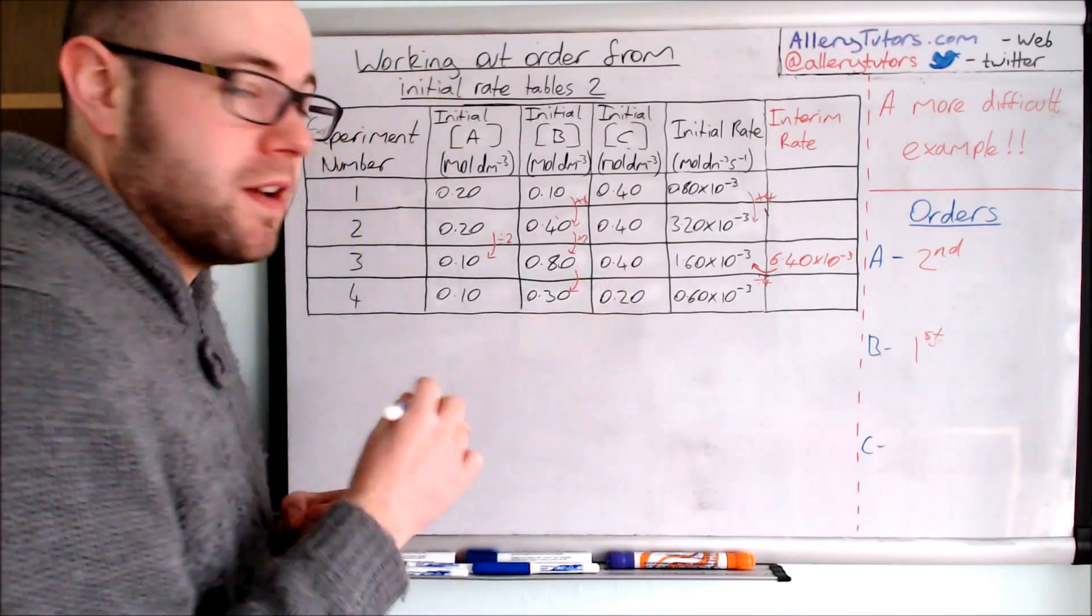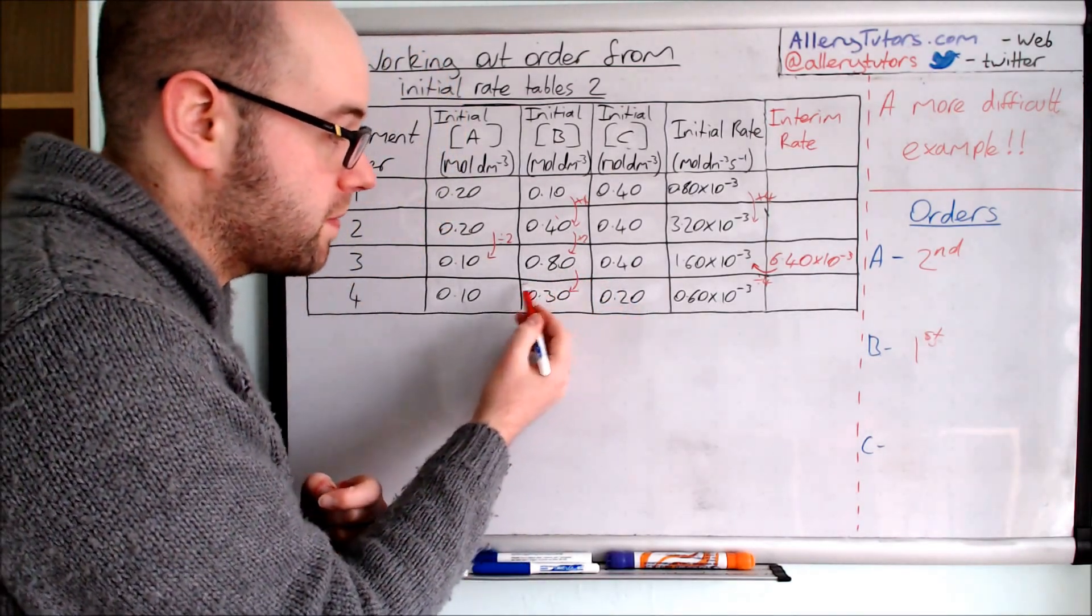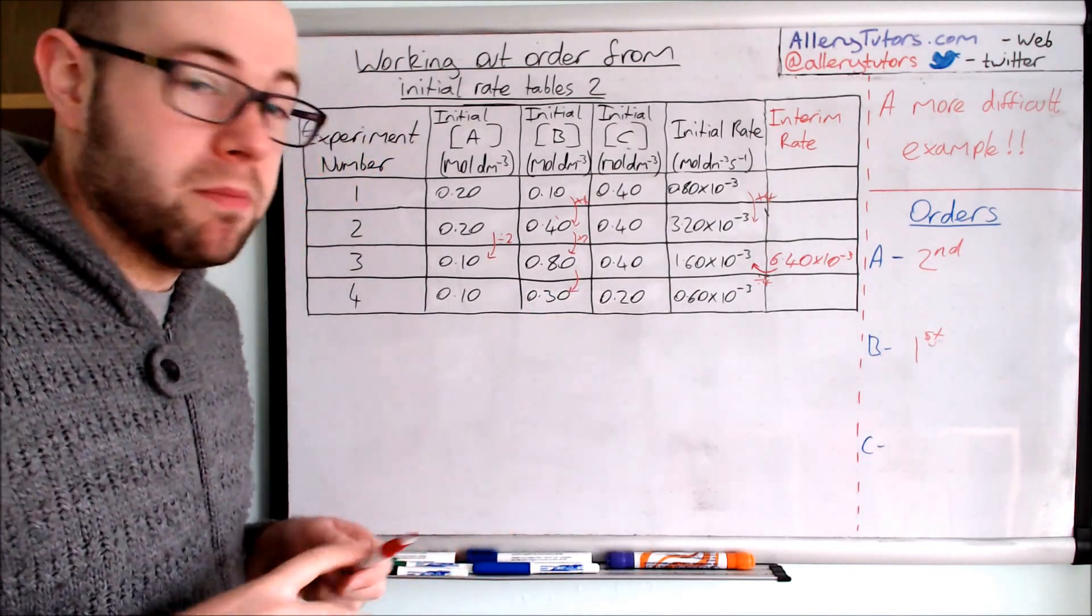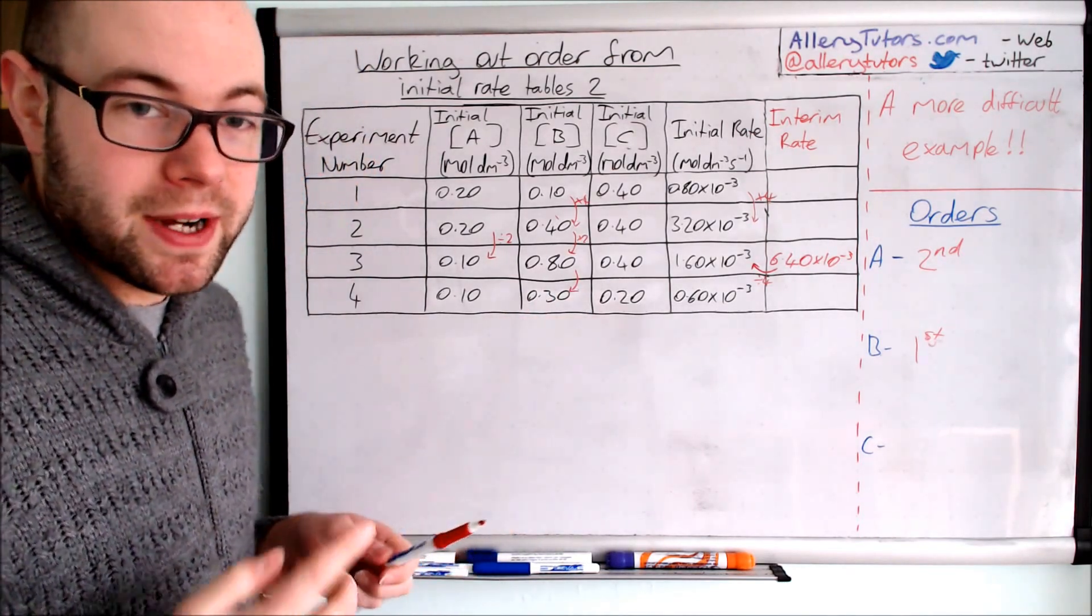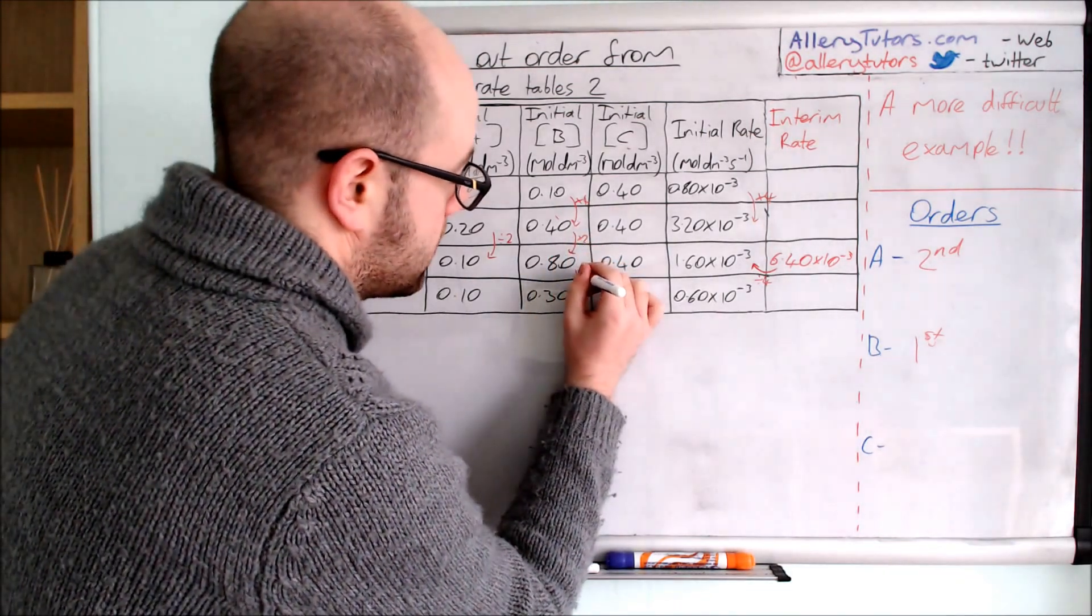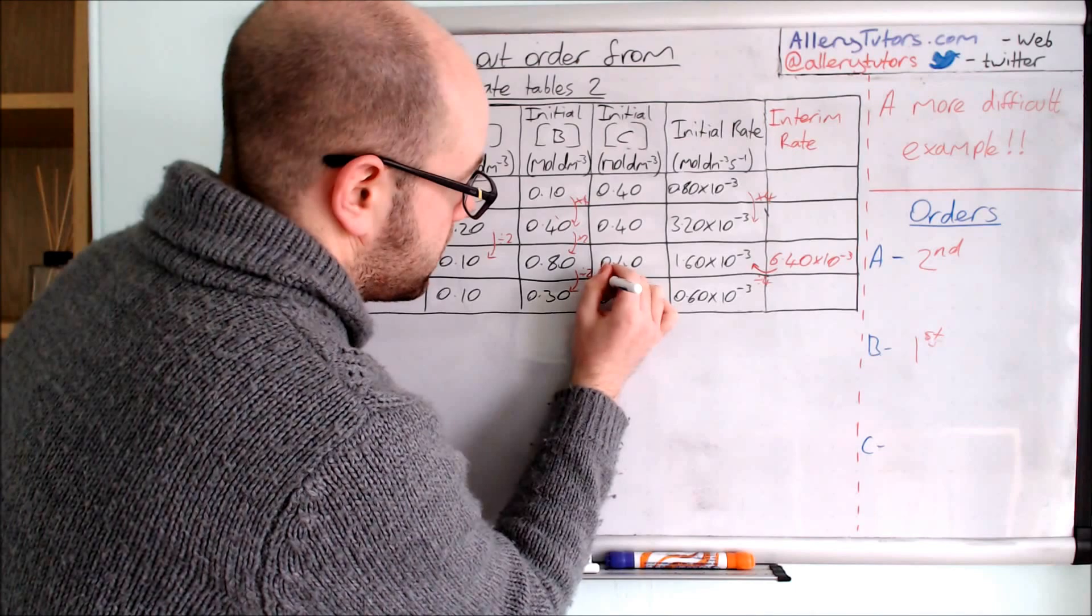If we look at the change from here to here, if we put 0.80 divided by 0.30 into our calculator, we should find out what the multiplier is, or what we're dividing it by. So this one's getting smaller, divided by 2.6 if you put that into a calculator.